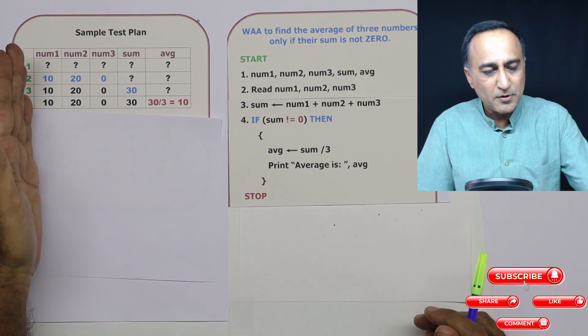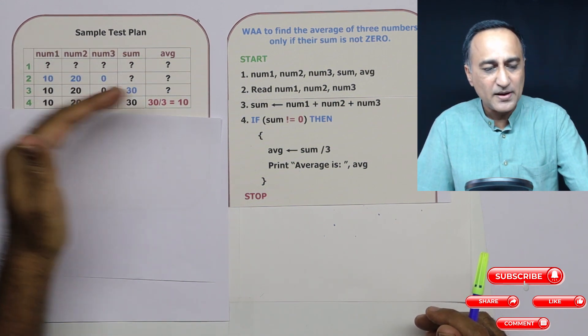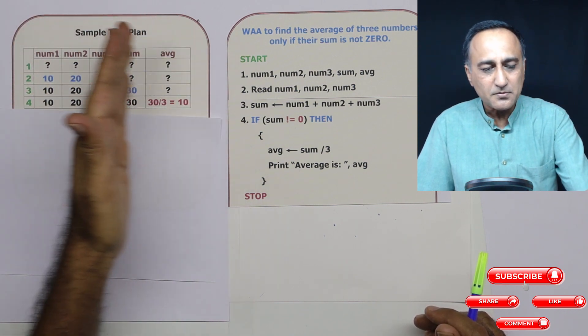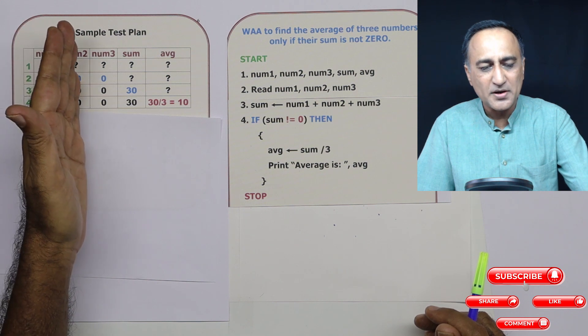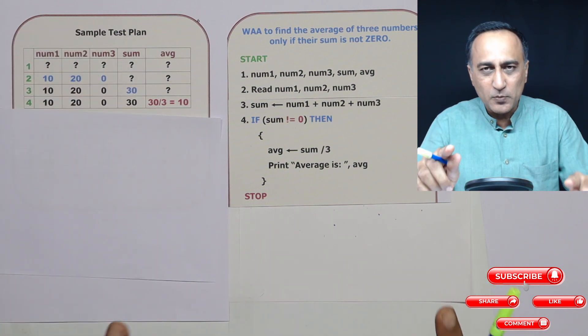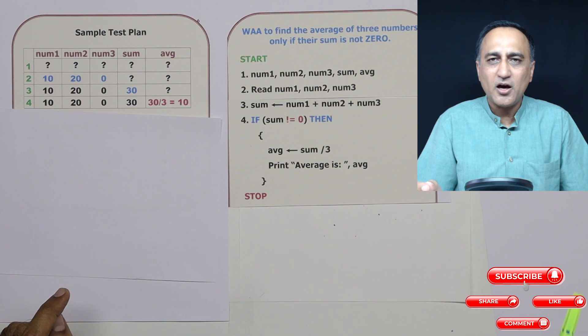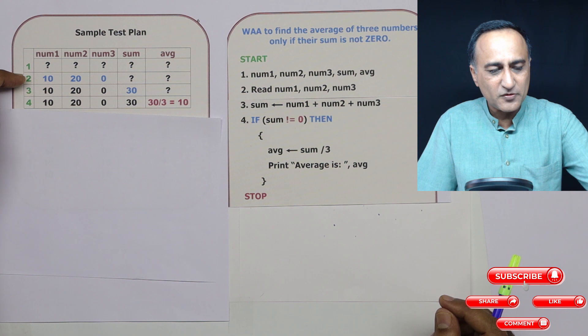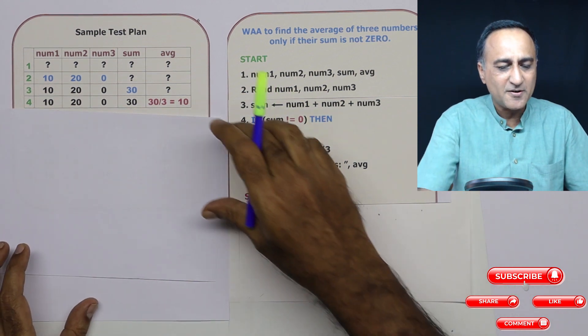So this is an example of how you create a sample test plan. In the columns, you will have all the variables or the memory locations, because that's what your program is doing, trying to change or manipulate the memory location. Algorithm is nothing but playing around with the memory contents. And each step of the algorithm is listed in stepwise fashion.